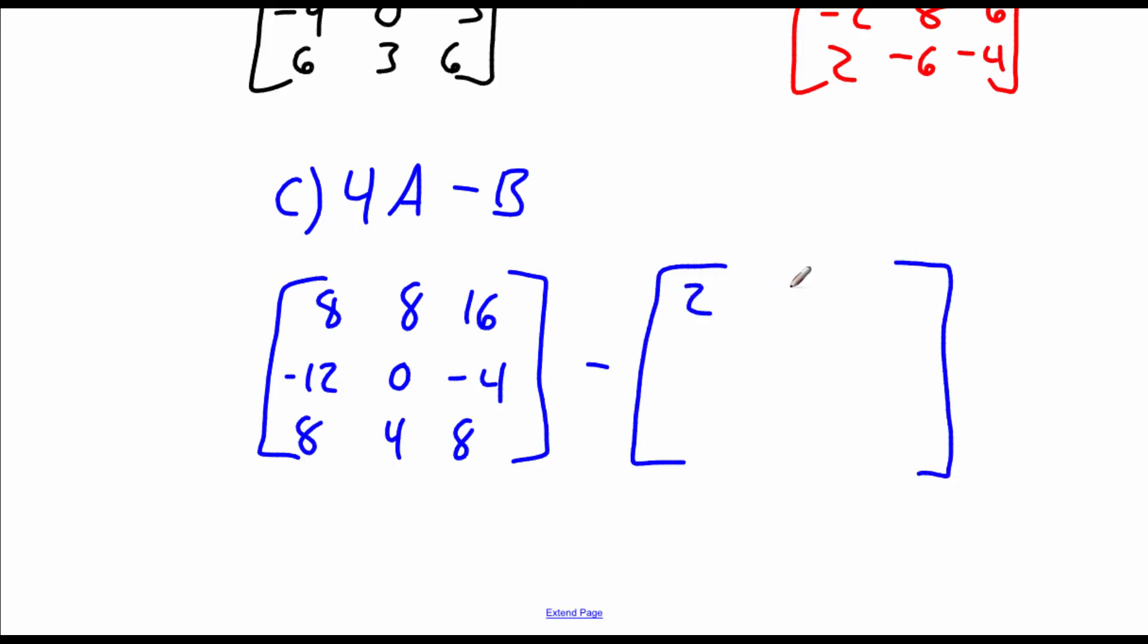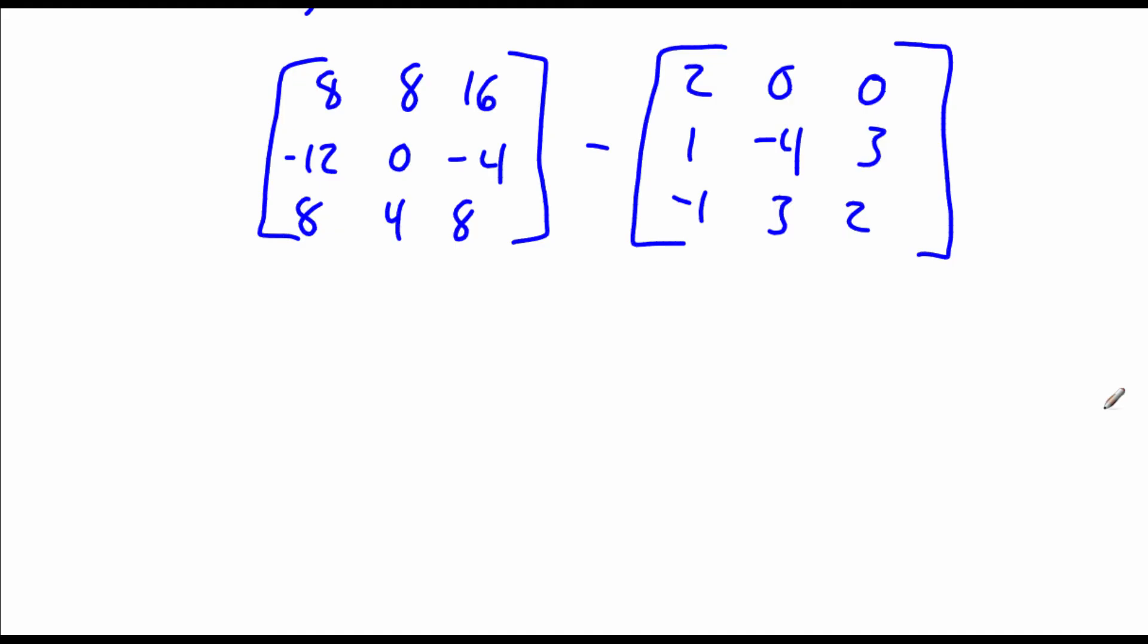And then we're going to subtract off our matrix B which is just the exact same thing that we had up above. So 2, 0, 0, 1, negative 4, 3, and bottom row is negative 1, 3, 2. Now we should double check just to make sure that our matrices have the same order. These are both 3 by 3 matrices so we can carry out that subtraction and we're just going to work with individual entries. So 8 minus 2 is 6, 8 minus 0 is 8, and 16 minus 0 is 16. If we look at the second row, negative 12 minus 1 is negative 13, 0 minus negative 4 gives us positive 4, and negative 4 minus 3 is negative 7. Bottom row, 8 minus negative 1 is 9, 4 minus 3 is 1, and 8 minus 2 is 6.